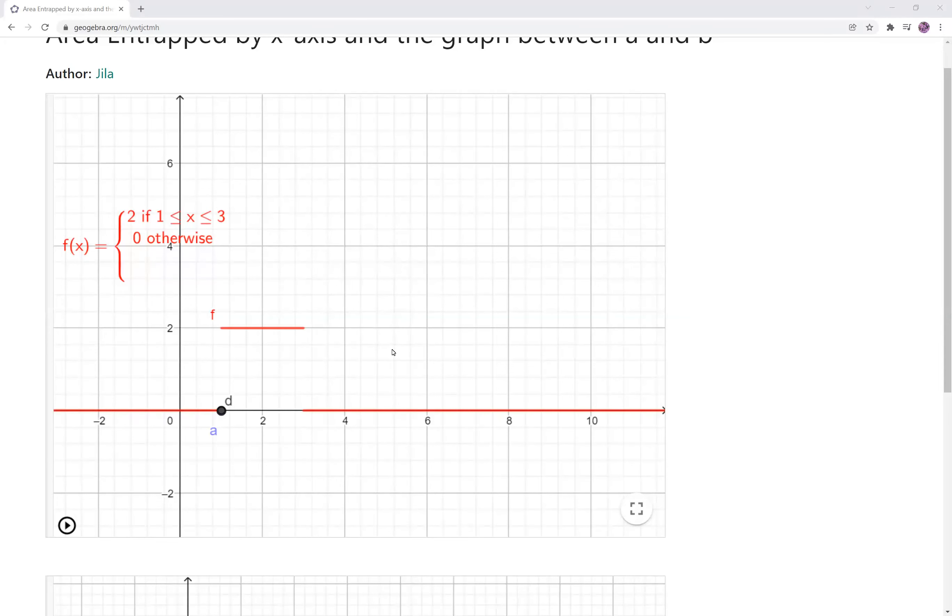So we want to talk about area between a graph of a function that is above the x-axis and two points on the x-axis. Basically, area entrapped between them. Let's say if the first point is right here and it's 1, and then second point D. Right now, 1 and D are the same point, so you don't see any area, right?